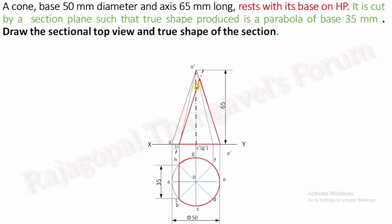Point 1 dash is on O dash A dash. On O dash B dash there is one more cutting point of the section plane — make it 2 dash. Extending a projector, it cuts OB in the top view. Next, on the axis it is cutting — make it 3 dash. Here this axis is perpendicular to XY, so we are unable to track where O dash C dash is cutting OC in the top view directly.